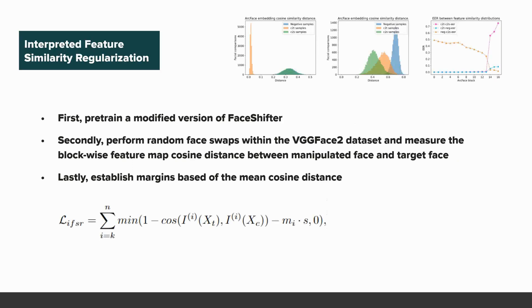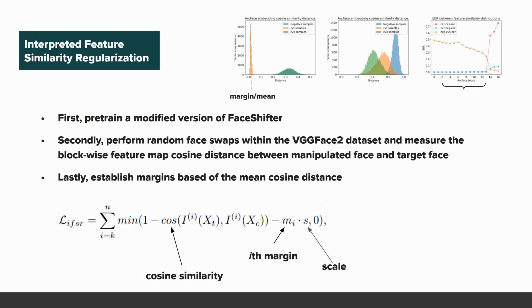Regarding the feature similarity regularization: we use a pre-trained and simple implementation of ArcFace, then perform random swaps within the VGGFace2 dataset. We measure the cosine distance and the mean distance for each block in ArcFace, which is then used to construct the regularization equation shown here.